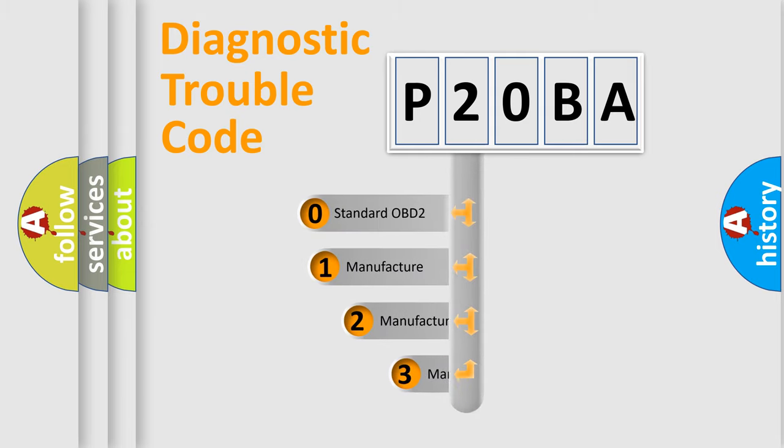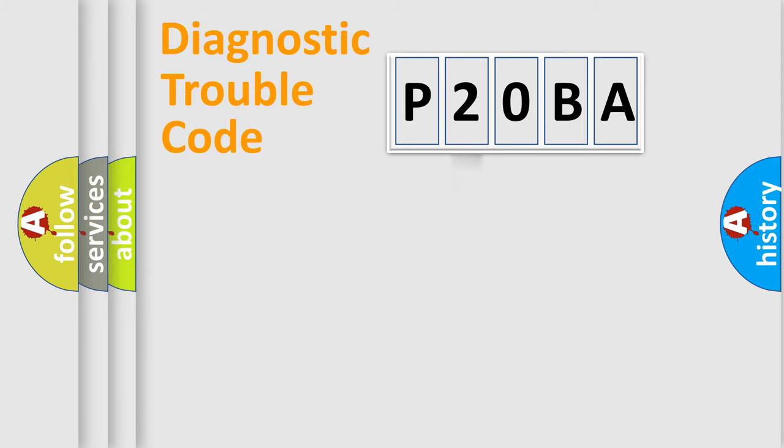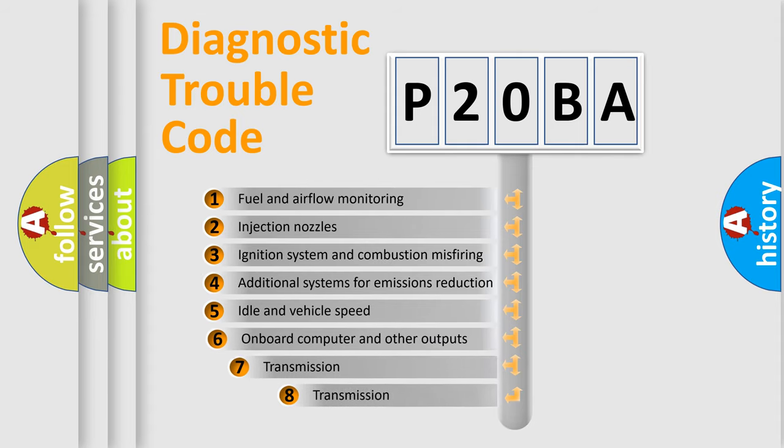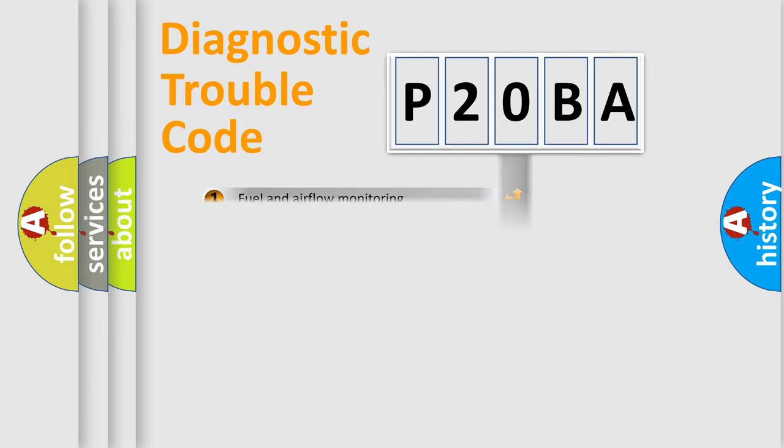If the second character is expressed as zero, it is a standardized error. In the case of numbers 1, 2, or 3, it is a more prestigious expression of the car-specific error. The third character specifies a subset of errors. The distribution shown is valid only for the standardized DTC code.